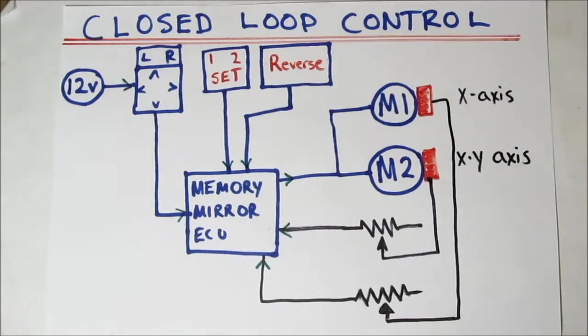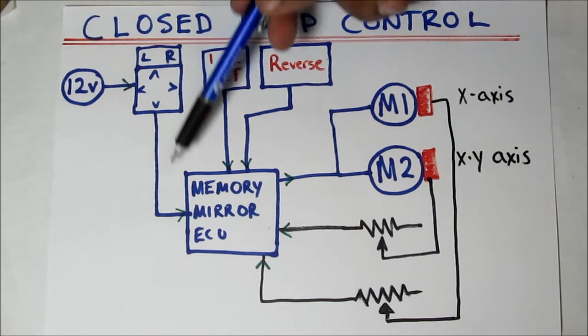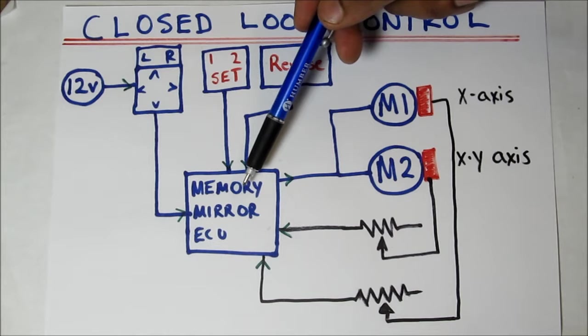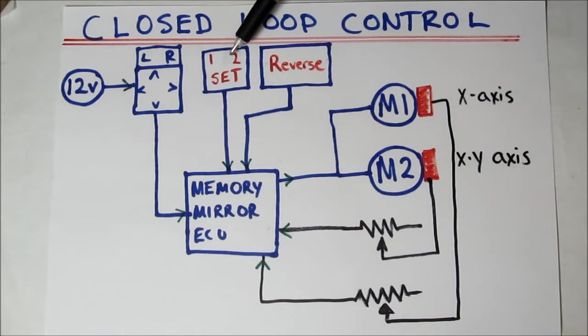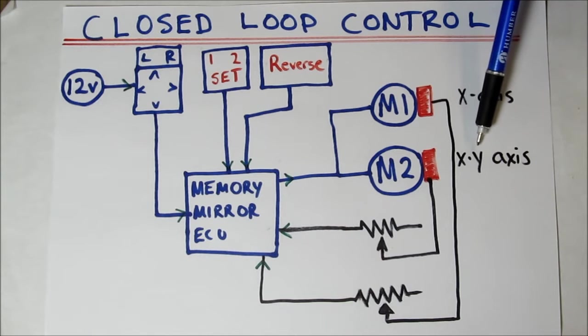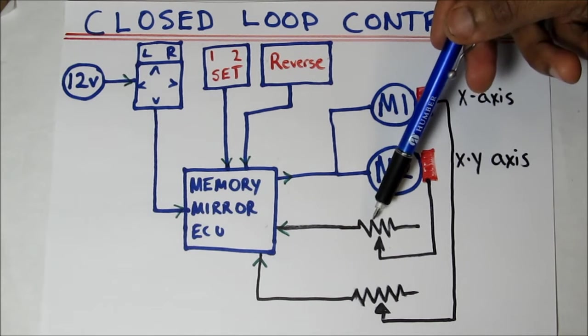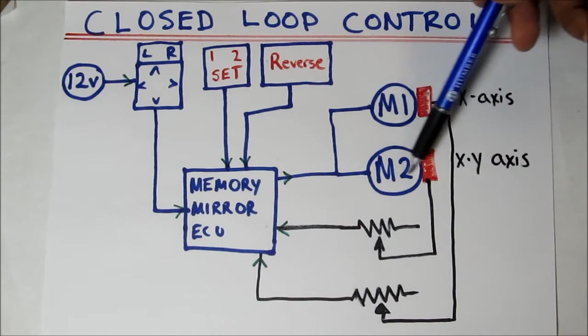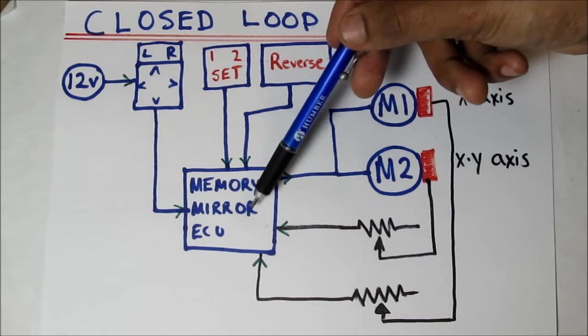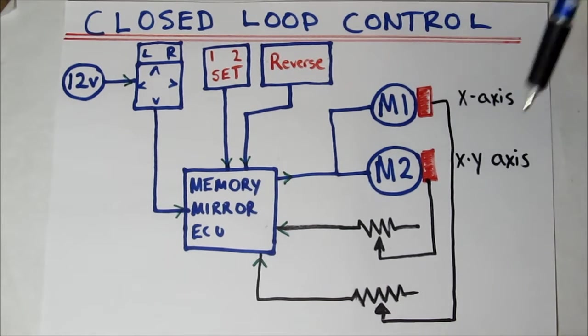Closed loop control is a little bit more complicated. We start with the 12 volt power input going to the switch. That switch goes to a memory mirror ECU. That ECU has a number of inputs including the 1, 2 and set buttons on the dashboard to control the memory settings, as well as a reverse signal from the transmission for the tilt down function. The ECU will then control motor 1 and motor 2 for the X axis and XY axis respectively. There are two linear potentiometers that are attached to the shafts of the motors. That becomes an input to the memory mirror ECU so it knows what position the mirror is in.